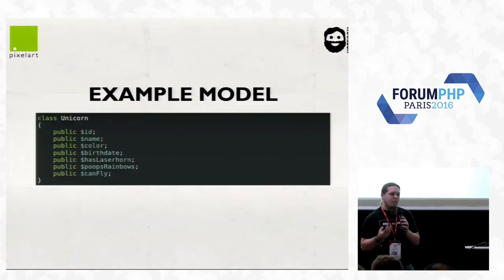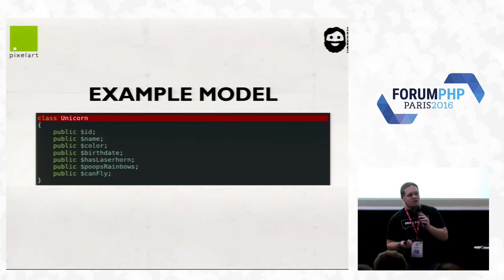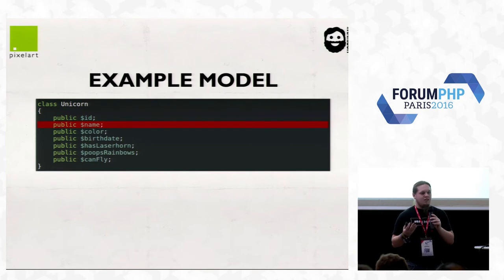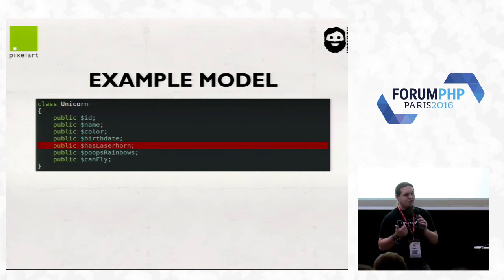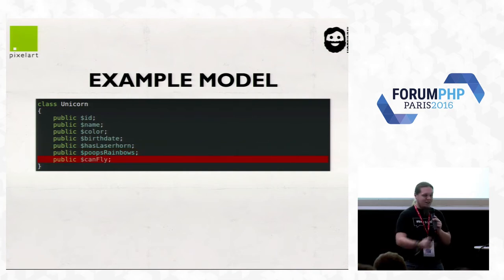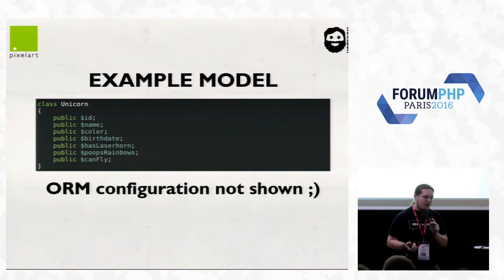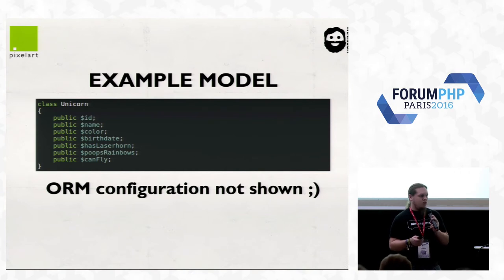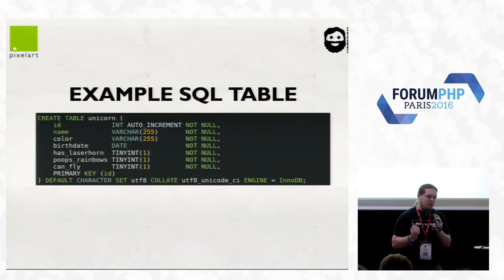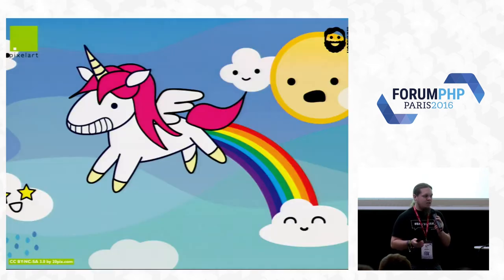So let's define our example model for today. We want the class Unicorn. It has an ID, a name, a color, a birth date, an age, it could have a laser horn, maybe it poops rainbows, or it can fly. That's a simple model. The ORM configuration is not shown because it's not necessary. This model is mapped to a database table definition by Doctrine, Eloquent, whatever.